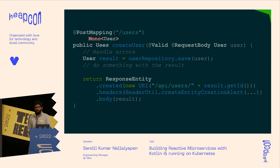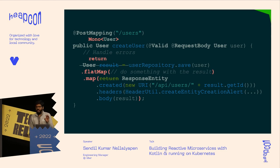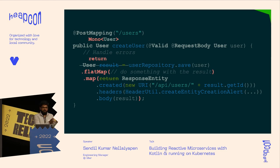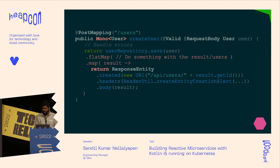To convert code to reactive, the first thing you do is wrap your object — in our case user — into a Mono, which can either emit a null error or one user object. Everything else remains similar: you save that object, map it into the ResponseEntity, and return it. It's straightforward — code you've written in the non-reactive world just needs a little modification to become reactive.